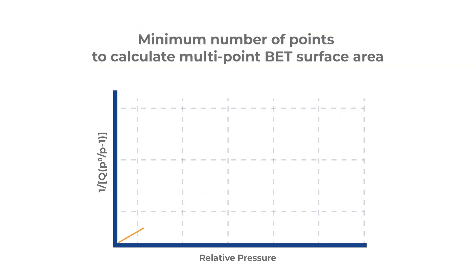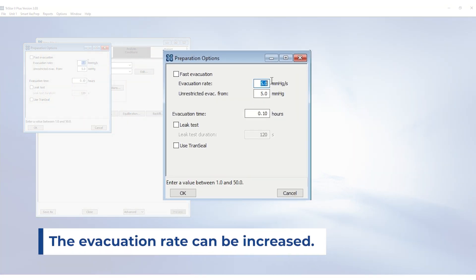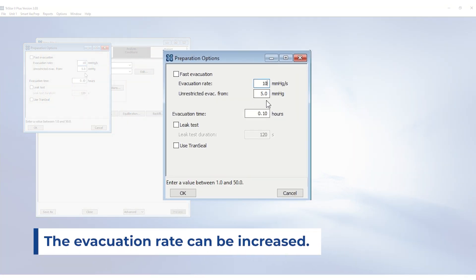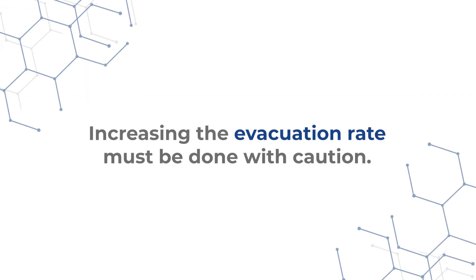The minimum number of points to calculate multi-point BET surface area is three points. The evacuation rate can be increased, which is set at 5 torr per second for most Micromeritics instruments. However, increasing the rate must be done with caution depending on how fluffy the sample is, so it is not pulled up in the manifold.